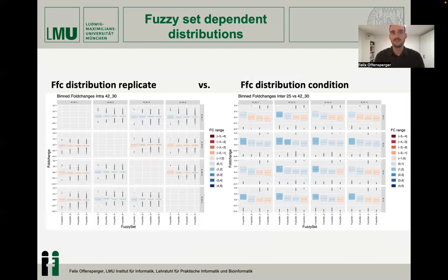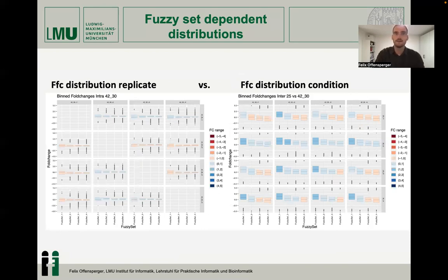Comparing FASI fold change distributions within one condition (left) with those across conditions (right), effect size differences and trends can be clearly seen. While between replicates there should only be the technical bias, on the right we are confronted with technical and biological bias plus the effect.